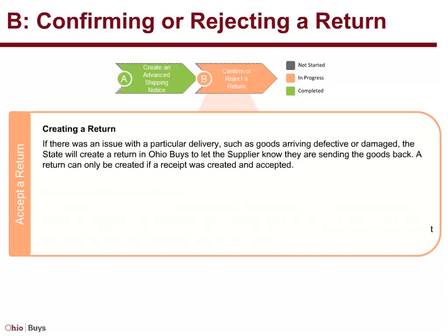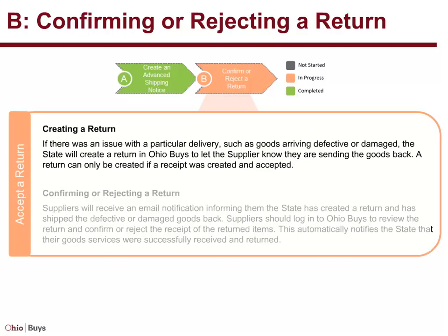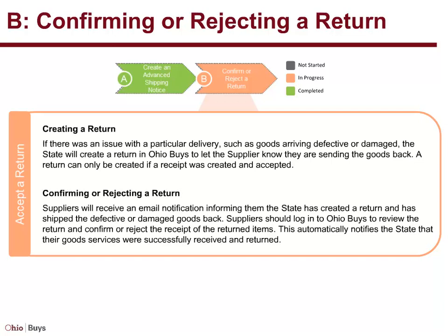If there was an issue with a particular delivery, such as goods arriving defective or damaged, the state will create a return in OhioBuys to let the supplier know they are sending the goods back. A return can only be created if a receipt was created and accepted. Suppliers will receive an email notification informing them the state has created a return and has shipped the defective or damaged goods back. Suppliers should log in to OhioBuys to review the return and confirm or reject the receipt of the returned items. This automatically notifies the state that their goods were successfully received and returned.